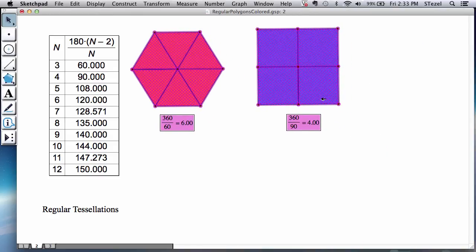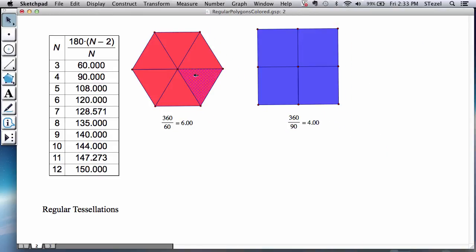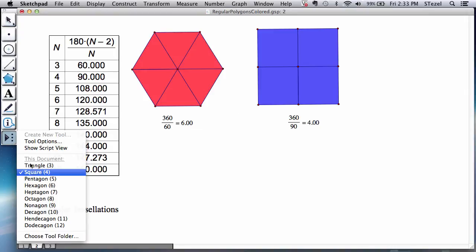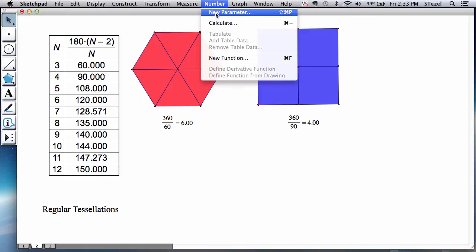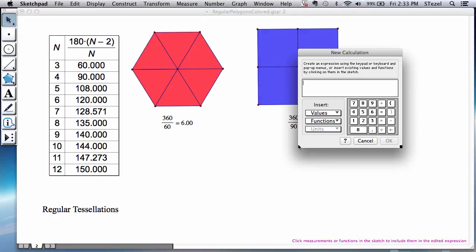So far we know, and we have seen this many times I'm sure in our daily lives, these two regular shapes do tessellate. Observe these are regular tessellations because I'm using only one polygon of a certain type at a time. Now let's see if pentagons will tessellate.